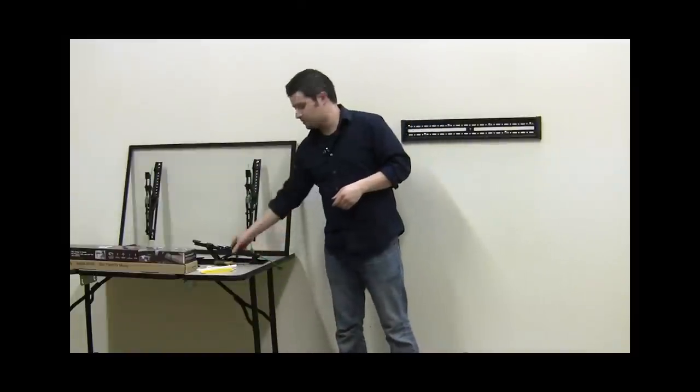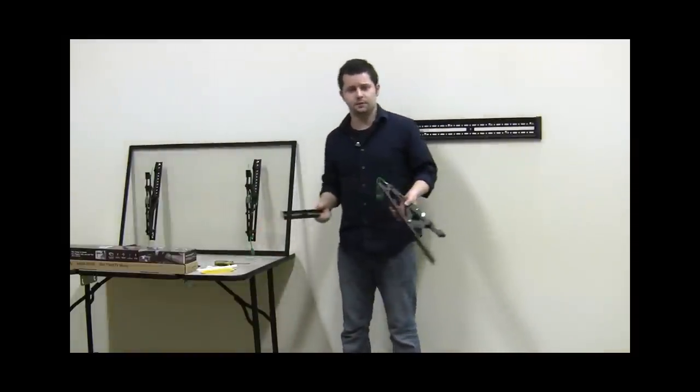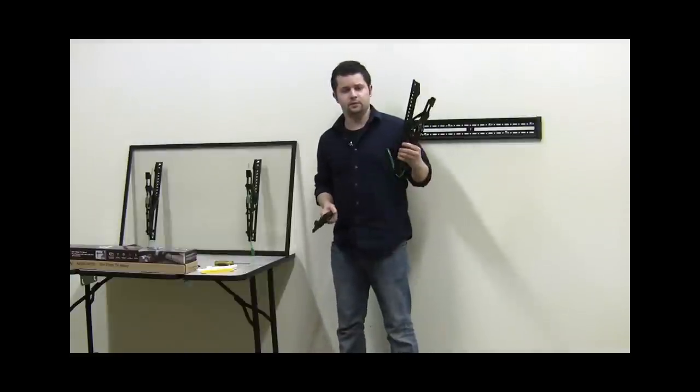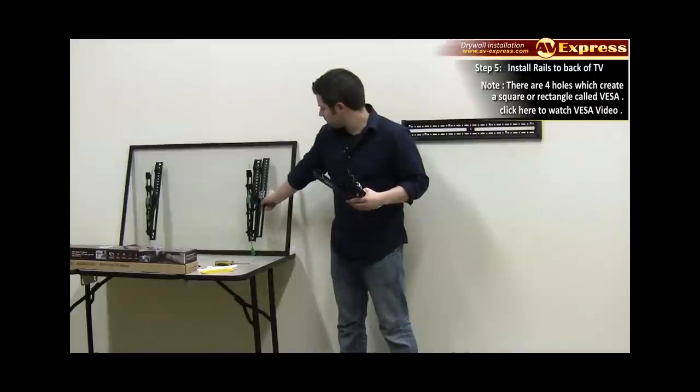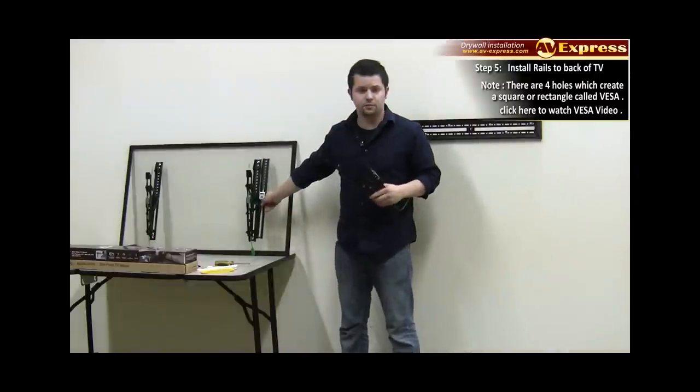Now that you've completed the installation of the adapter plate, the next step is to install the vertical rails on your television according to your TV's VESA size. Whether you have a tilting mount or a fixed mount, use the provided hardware to install these on the back of your television and screw them into place.